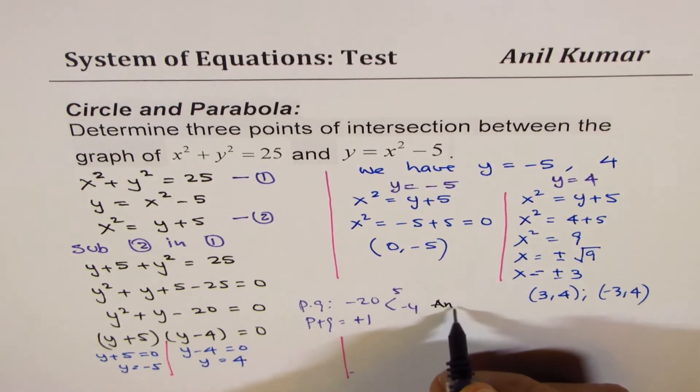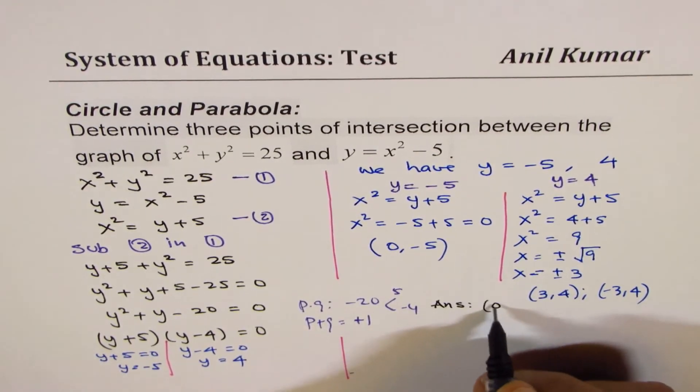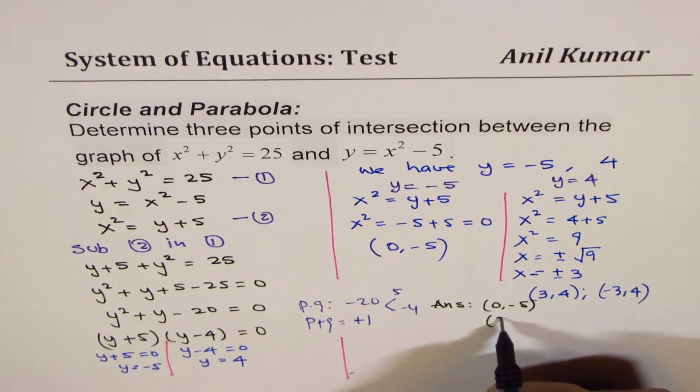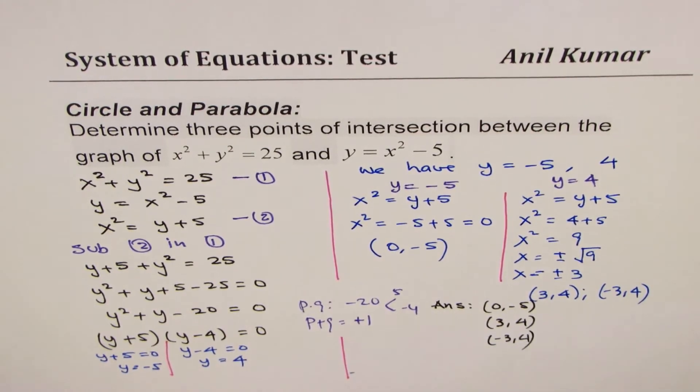The answer here is the points are (0, -5) and these two: (3, 4) and (-3, 4). That is how we can get the solution.